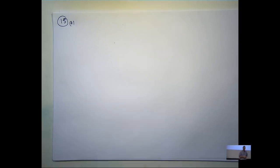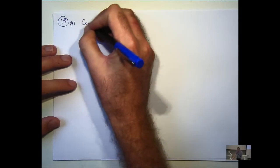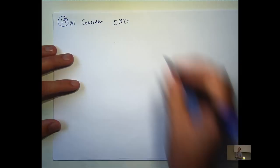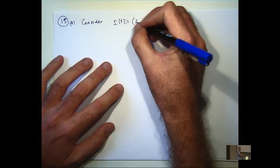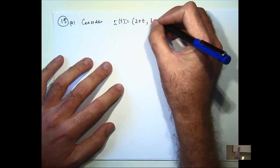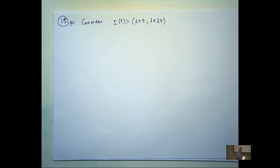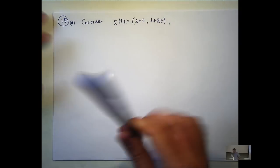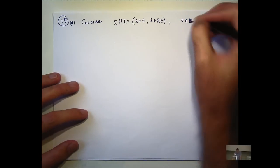All right, so in the first part, we're only working in the x-y plane here, so the sketches are not too bad. Now again, I'm just going to write them without the i, j, k's. And remember, when we define a function, not only do we need the component functions, but we also need an interval that we're restricting the domain to. In this case, it's all real values of t.